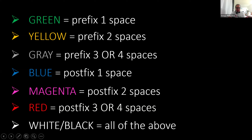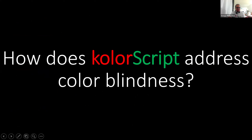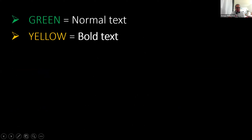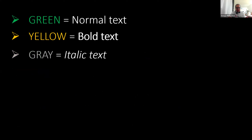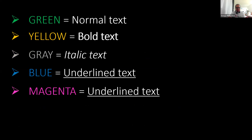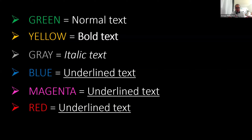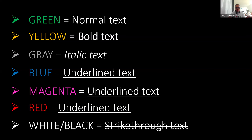White will cover all of the above because it's an indicator that a word is not registered or is in an invalid format. For color blindness support: green will be shown as normal text, yellow as bold, gray as italic, blue as underlined text, as well as magenta and red. All definitions — defining a constant, variable, and function — are underlined, and you distinguish between the three by counting the postfix spaces. White and black will be shown as strikethrough, but on the current version this is not yet implemented.